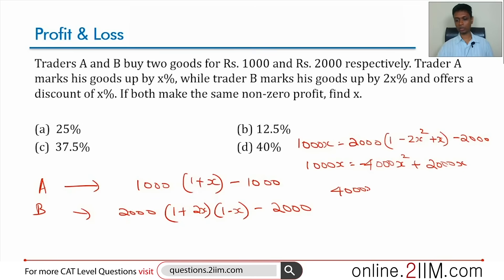4000X² equals 1000X. So 4X² equals X. 4X² minus X equals zero. X(4X - 1) equals zero. X can be zero or X can be 1/4. It cannot be zero because they make the same non-zero profit, so X has to be 1/4.